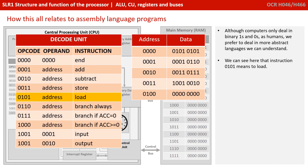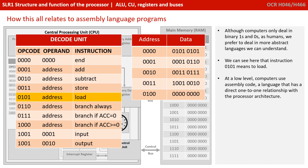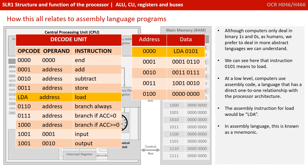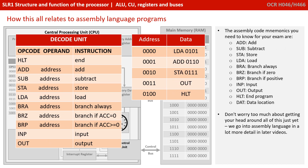Although computers only deal in binary ones and zeros, as humans we prefer to deal in more abstract languages that we can easily understand. We can see that the instruction 0101 actually means 'load'. At a low level, computers use what is known as assembly code — a language that has a direct one-to-one relationship with the processor architecture. The assembly language instruction for load, for example, could be LDA. In assembly language, we call this short three- or four-letter code a mnemonic. The assembly code mnemonics you need to know for the exam are listed below. We're going to go into assembly language in a lot more detail in later videos.